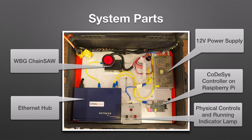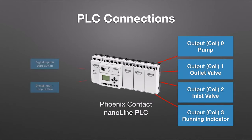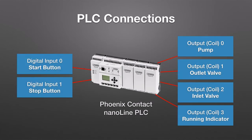Taking a peek behind the curtain, let's look more closely at how things are connected and what's actually being done. The heavy lifting of device control is done by the Phoenix Contact NanoLine PLC, which uses its internal relay outputs to control power to the pump, valves, and running lamp. It also accepts the physical start and stop button inputs.